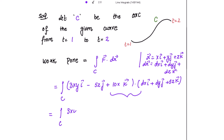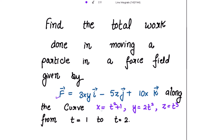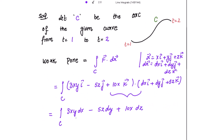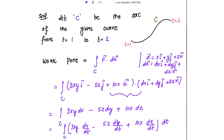Writing the dot product with dr gives: 3xy dx − 5z dy + 10x dz. Since x, y, z are given in terms of t, we rewrite this as: 3xy (dx/dt) − 5z (dy/dt) + 10x (dz/dt), all multiplied by dt, because x, y, z are functions of t.